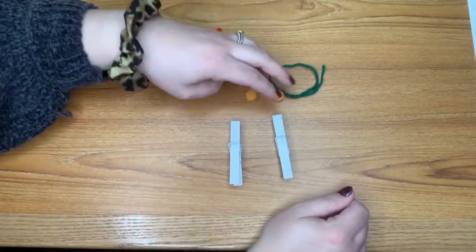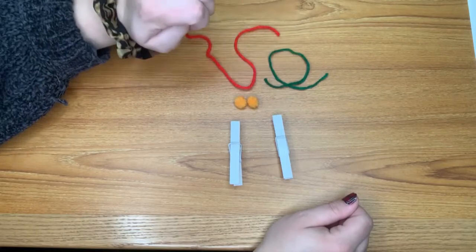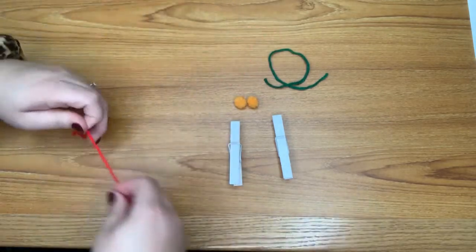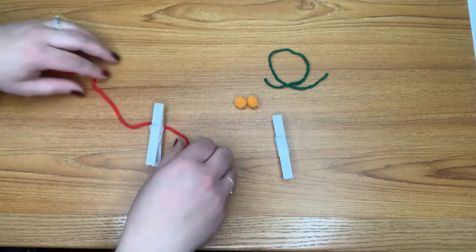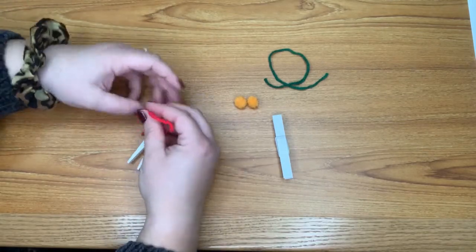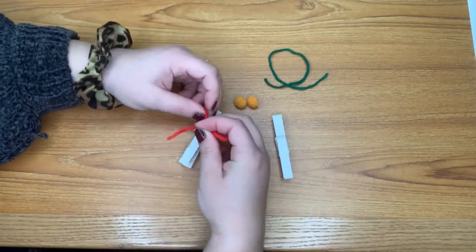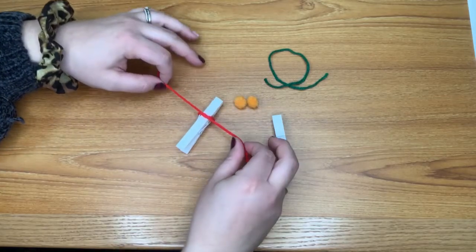So the first thing we're going to do is tie our yarn around our clothespins like a little scarf. We're gonna make sure the knot's in the front.